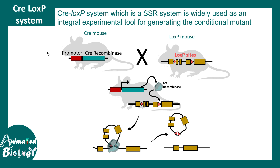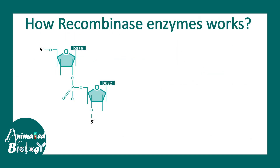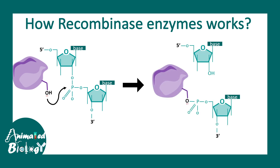Whether the outcome is deletion or inversion depends on the orientation of the LoxP site. If the LoxP sites are oriented in the same direction, it results in floxing out or deletion of a portion of the construct. Site-specific recombination, as the name suggests, is a recombination reaction directed by specific sequences known as recombination recognition sequences. The Cre enzyme is a tyrosine-based recombinase — the hydroxyl group acts as a nucleophile, attacks the phosphate backbone, and creates an enzyme-DNA hybrid, eventually facilitating strand passage.